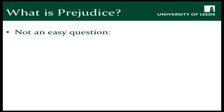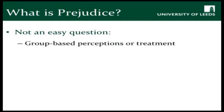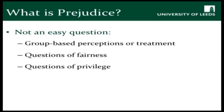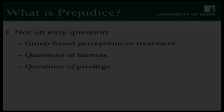So we see from looking at these two questions that actually it's not as clear-cut as we'd like to imagine when we talk about what prejudice is and what prejudice isn't. So if we're going to actually try and define prejudice, I'll suggest three ways that are well-known and well-discussed in the psychological literature to help us understand what prejudice is. These things we'll be looking at are group-based perceptions or treatment, questions of fairness, and questions of privilege. We'll tackle them one after the other.